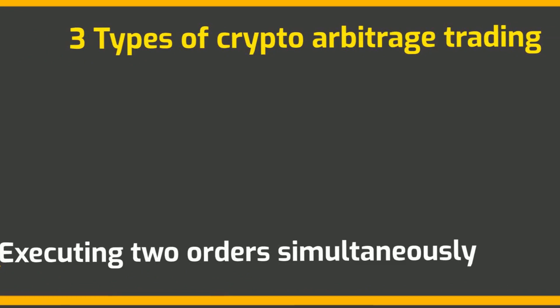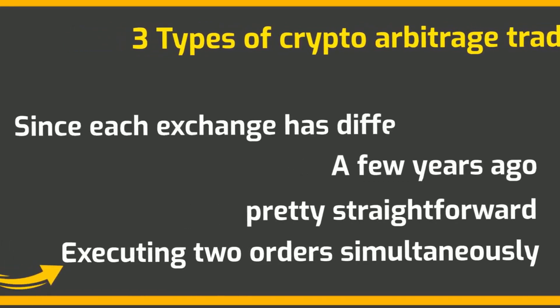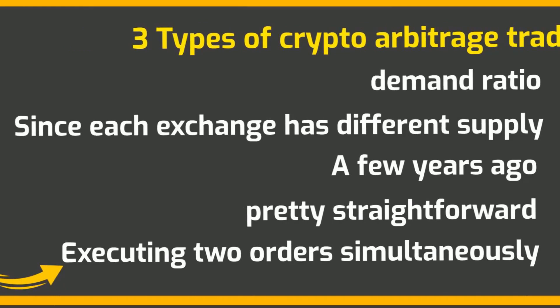The mechanics for this kind of arbitrage are pretty straightforward, or at least used to be a few years ago when prices for crypto assets across different exchanges tremendously varied. Exchange arbitrage exploits price differences of an asset between various exchanges and independent brokers, since each exchange has a slightly different supply or demand ratio.